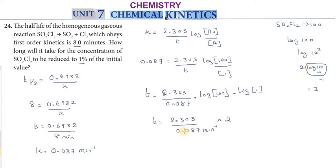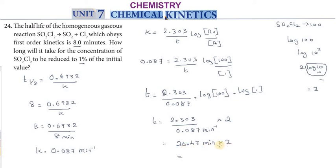Therefore: t equals 2.303 divided by 0.087, multiplied by 2, which gives 26.47 minutes into 2, equaling 52.94 minutes. So it takes approximately 52.94 minutes for the concentration of sulfur chloride to reduce to 1% of its initial value.